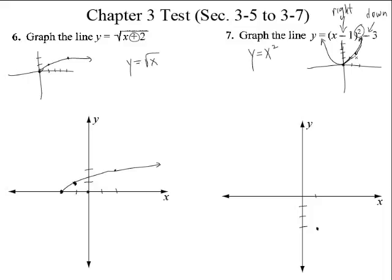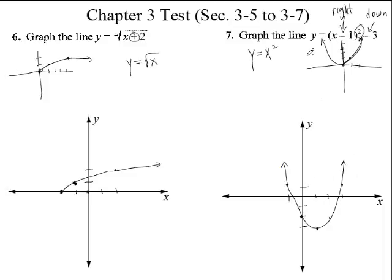Now what did we do? We went over one, up one. We went over two, up four. Let's put a few points in here. If we move it over one, we go up one. If we move it over two, we go up four — one, two, three, four. And the same thing to the left: if I move it to the left once, I go up one; if I move it to the left twice, I go up four. It's symmetric to the other side. You start seeing the shape of our parabola. And there's our parabola.